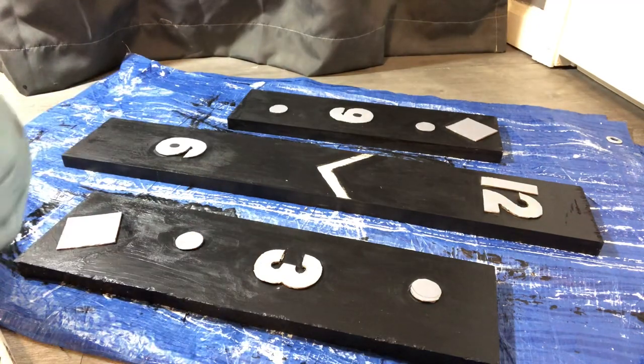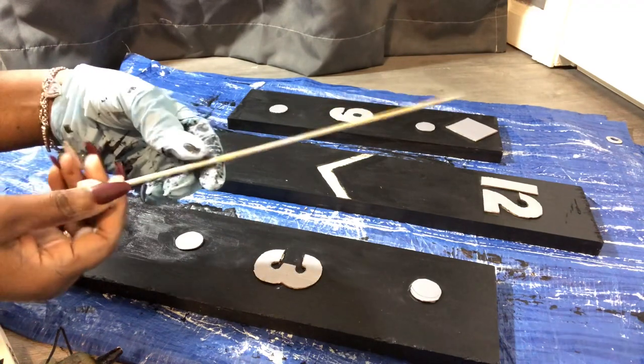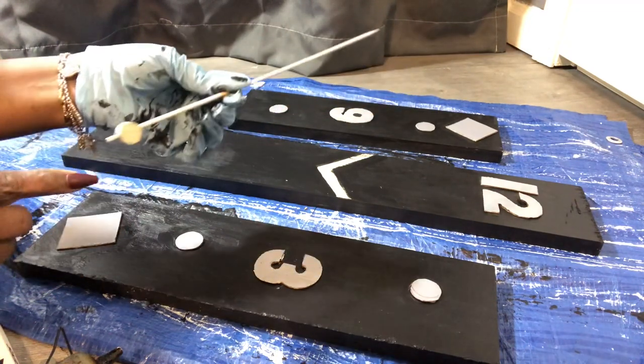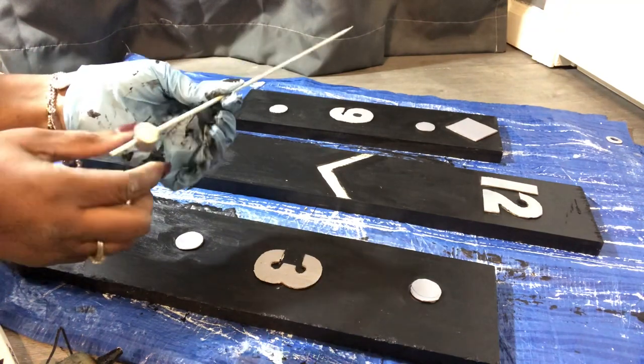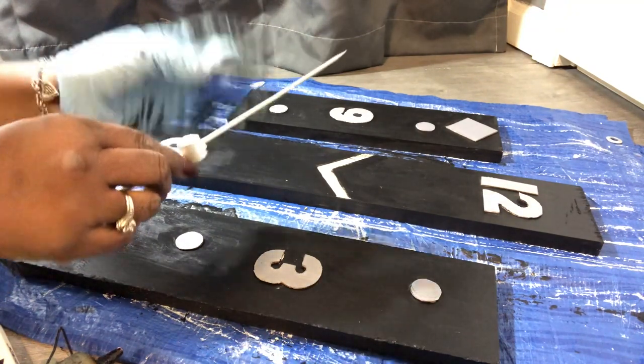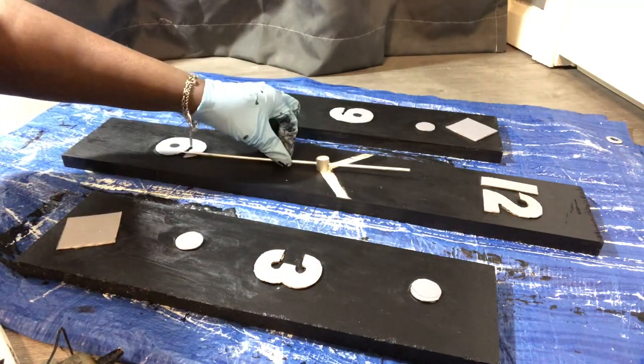I'm going to be using a skewer which I spray painted silver. I've cut a wooden dowel and drilled a hole in there. This is going to be my hand that sits like that.